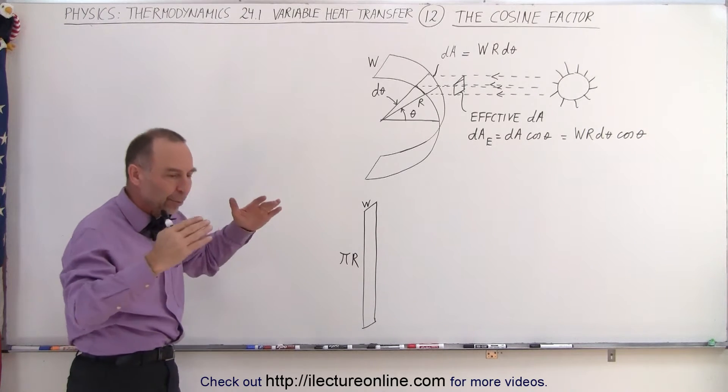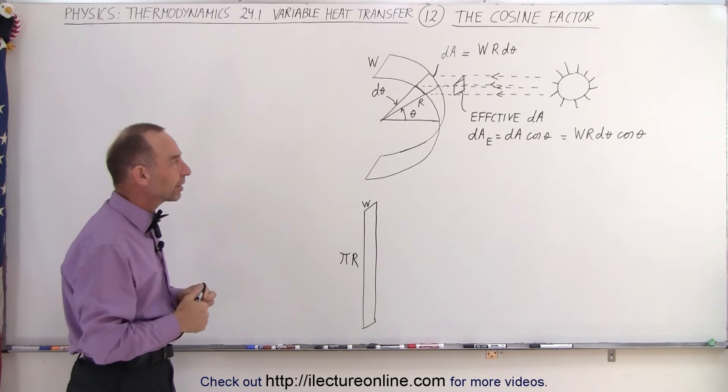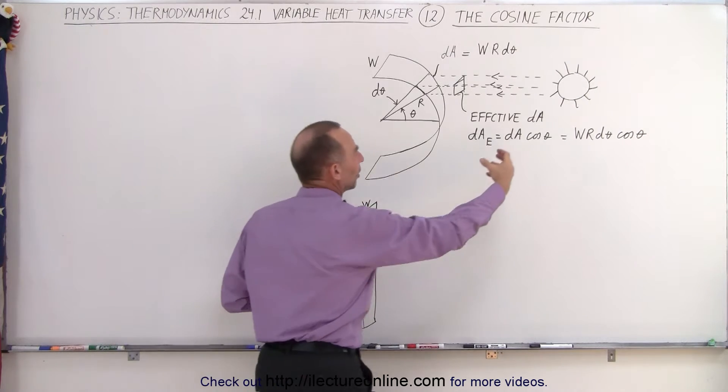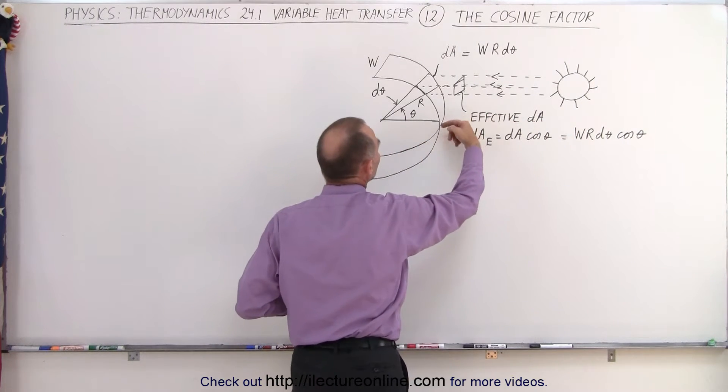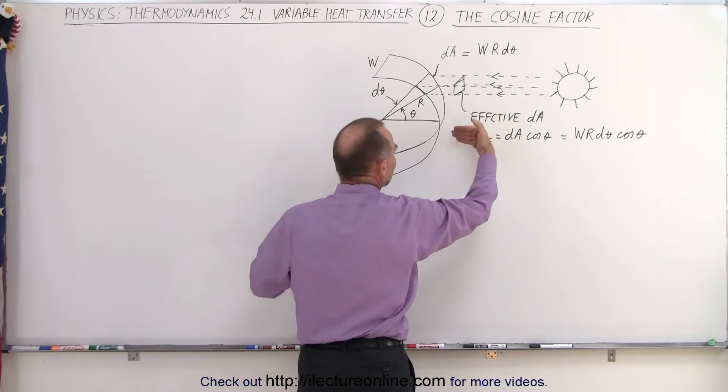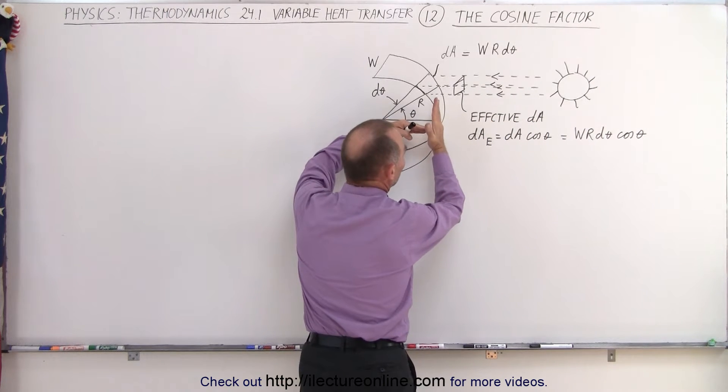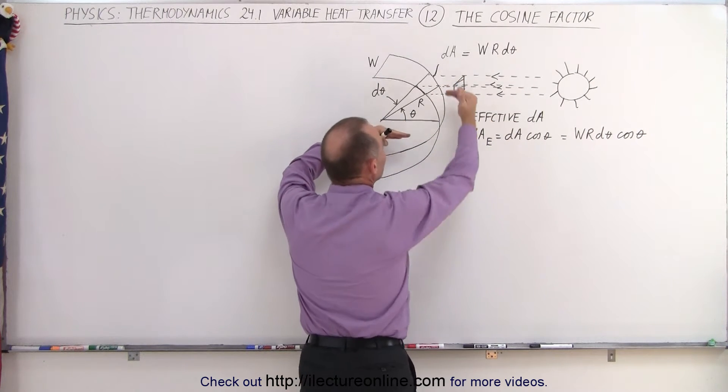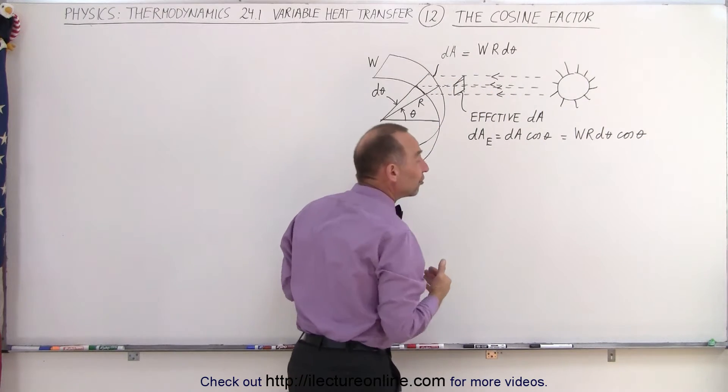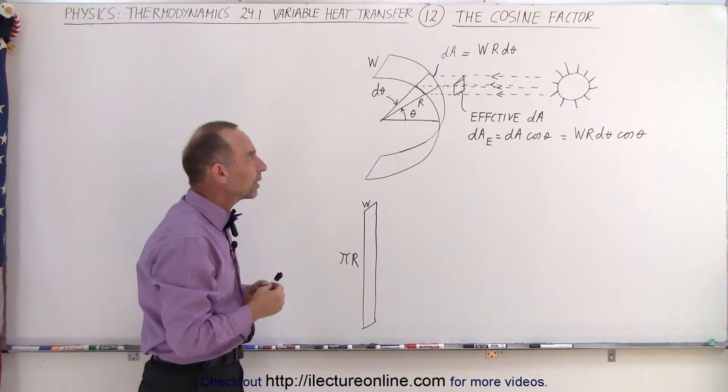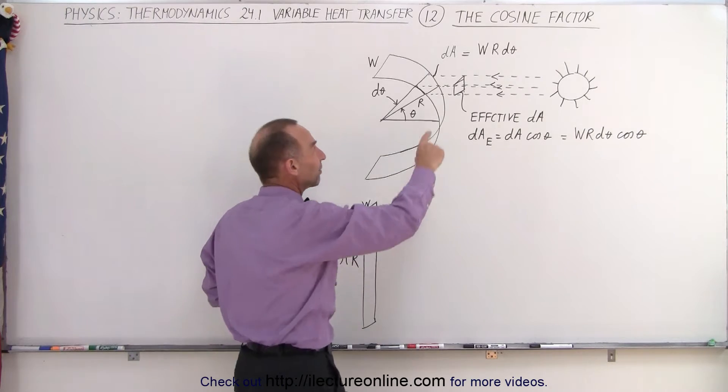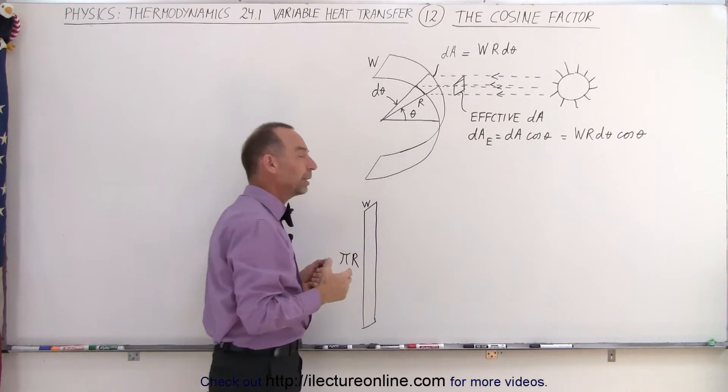How do we calculate the amount of radiation received by that object? And of course, you can see that if it's illuminating the equator, then the radiation is perpendicular to the surface, but at other places on the object, the radiation is not perpendicular to the surface, so we have to take that into account, and that's what's called the cosine factor. So let me explain.